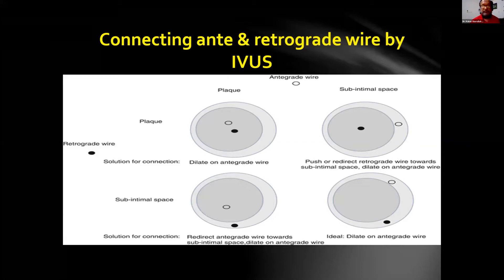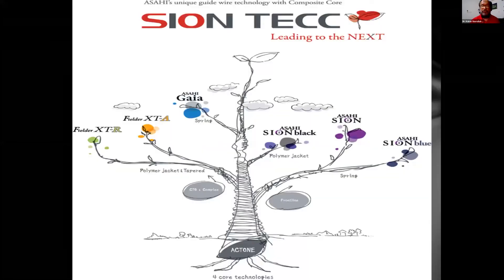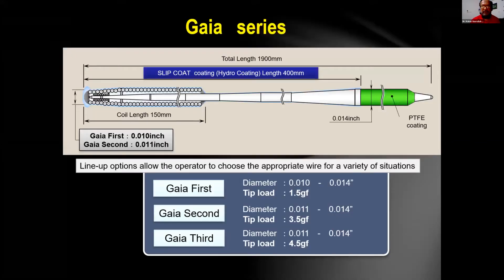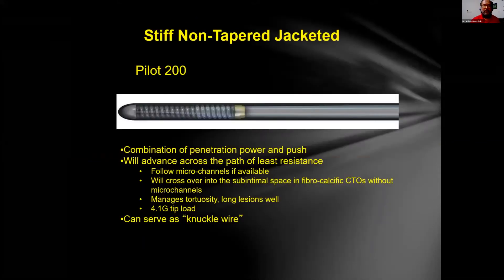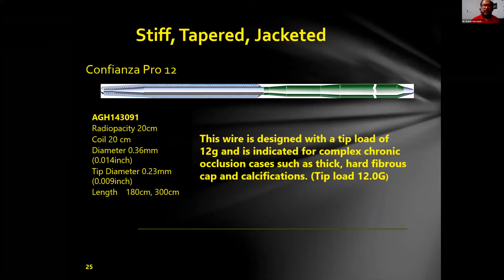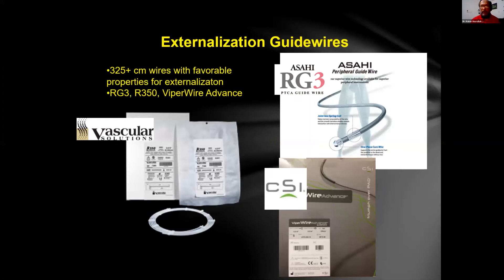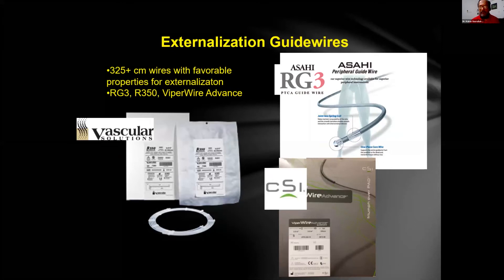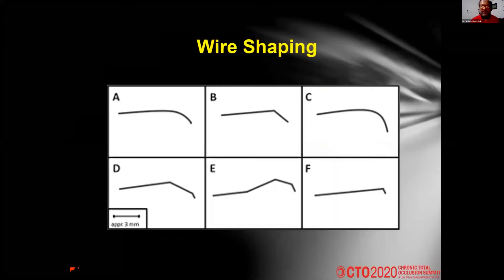For wire selection and shape control, we have different types: the Sion family, Gaia, Gaia Next and tapered, and also Pilot, Confianza Pro 9 and 12. Hydrophilic and tapered wires are very important for doing retrograde. The long wires — 300 centimeter, 350 centimeter — such as RG3 and Viper wire, are also essential.